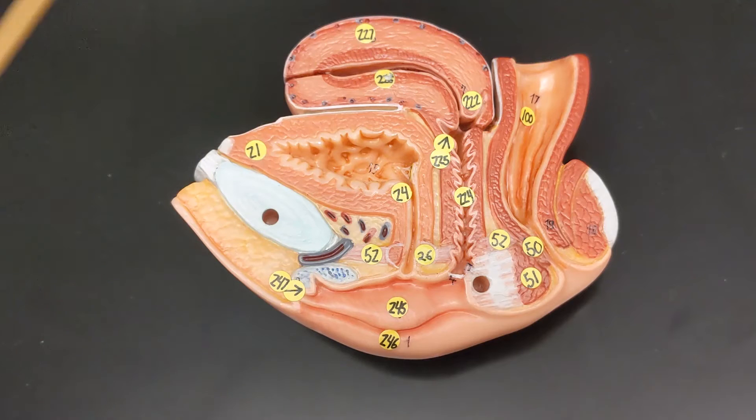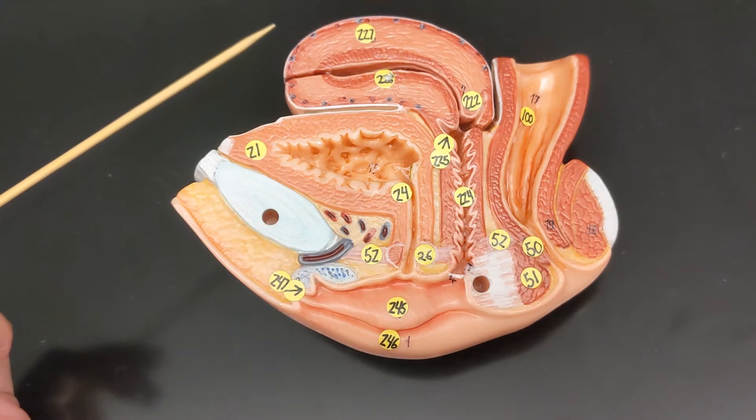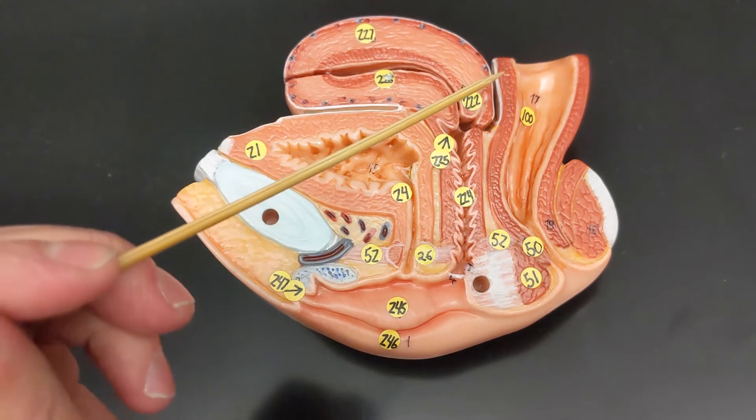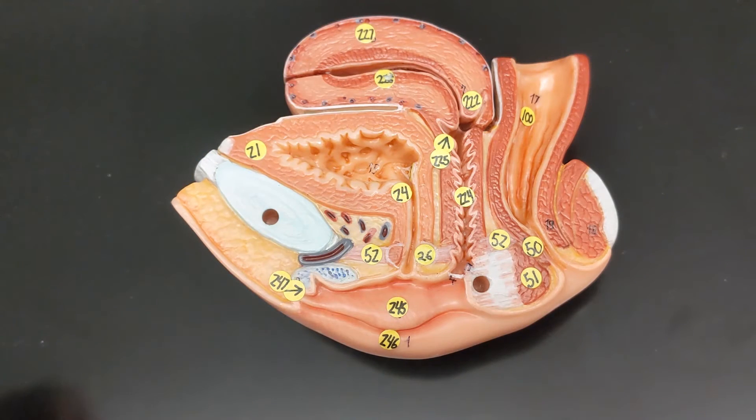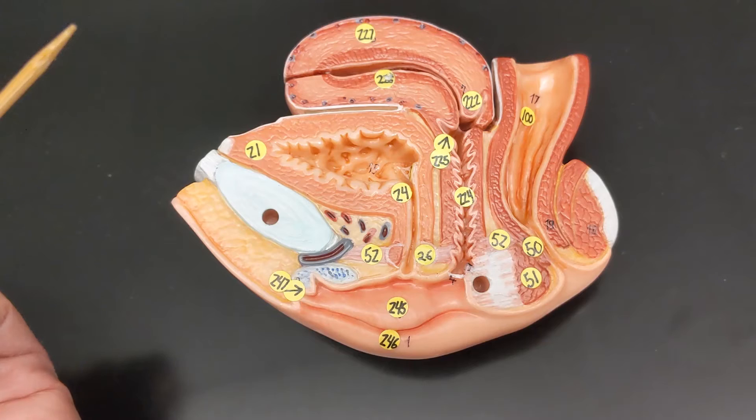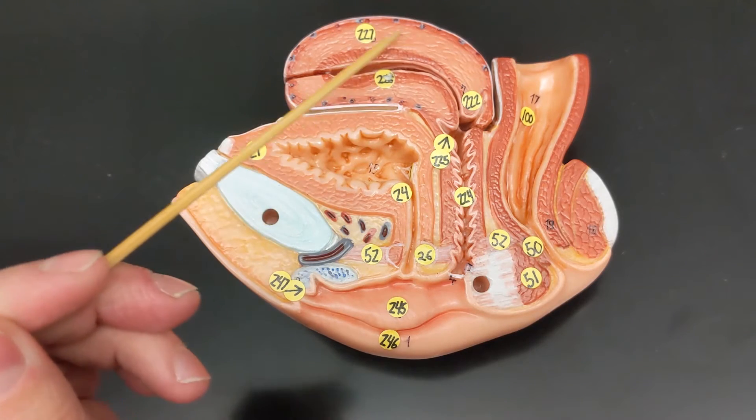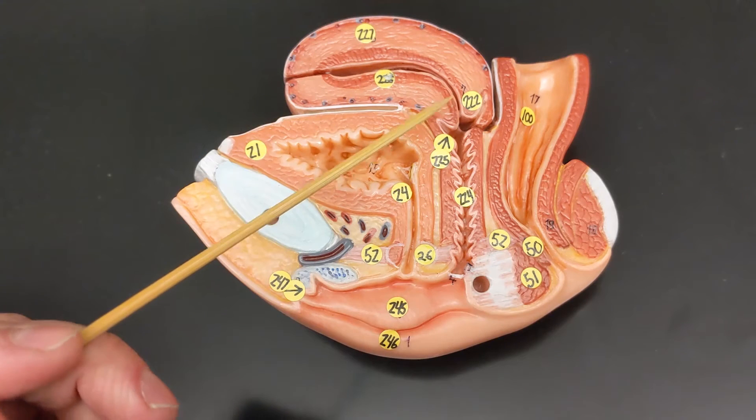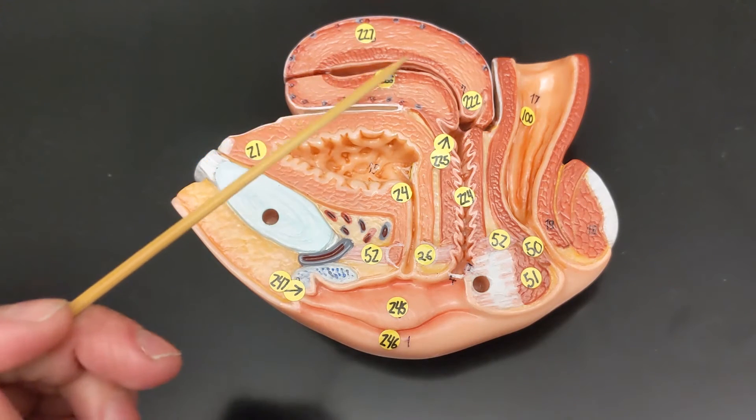So now I want you to think there are three layers of the uterus, what are they? So the outer layer is the perimetrium, the middle layer is the myometrium, and the innermost layer is the endometrium.